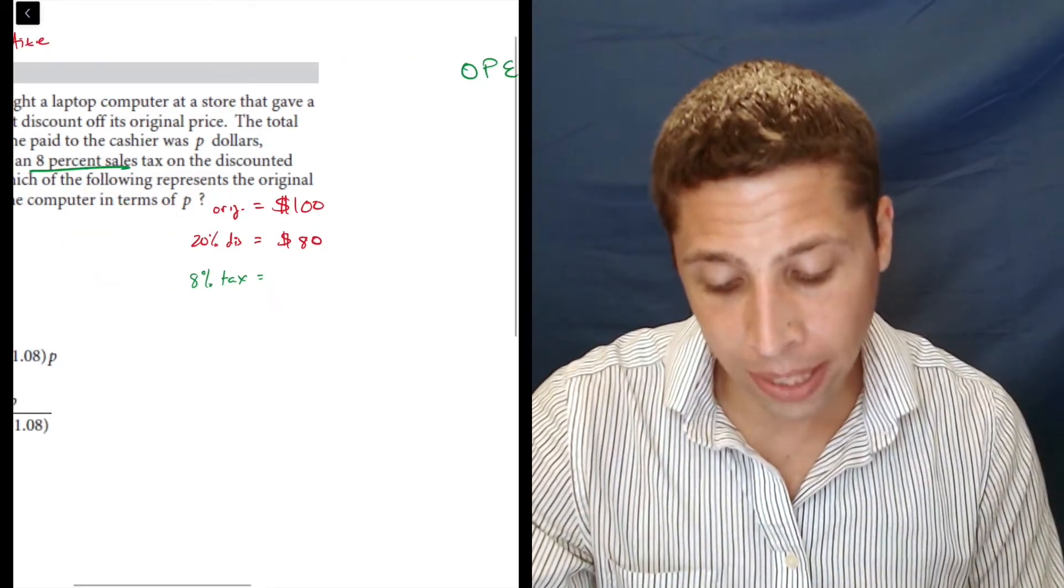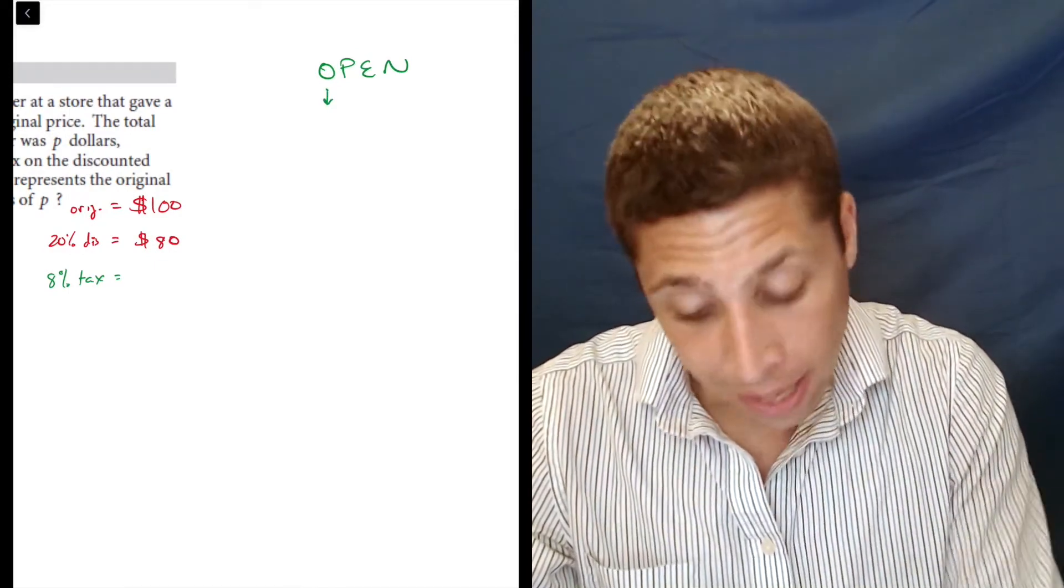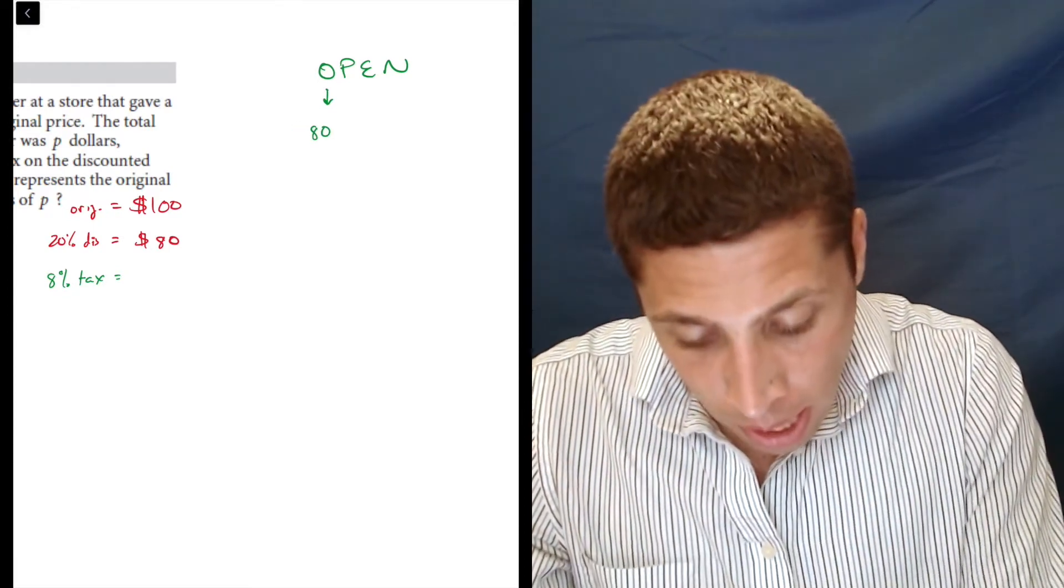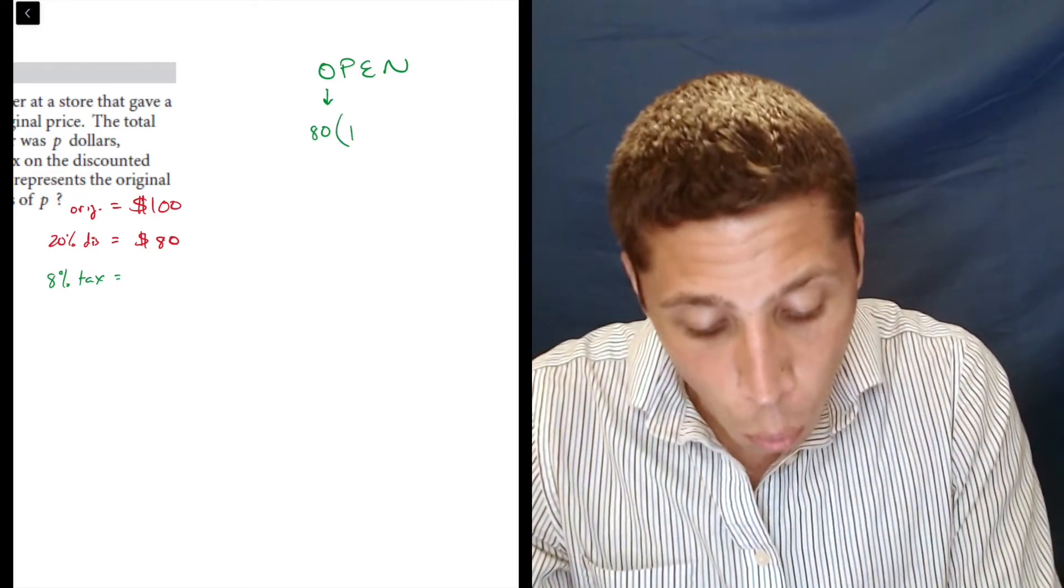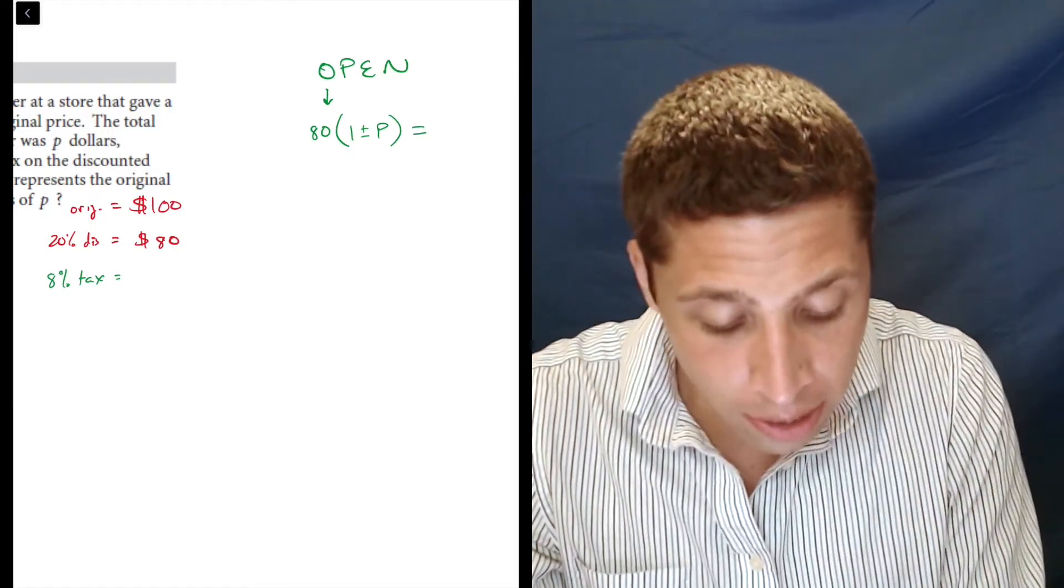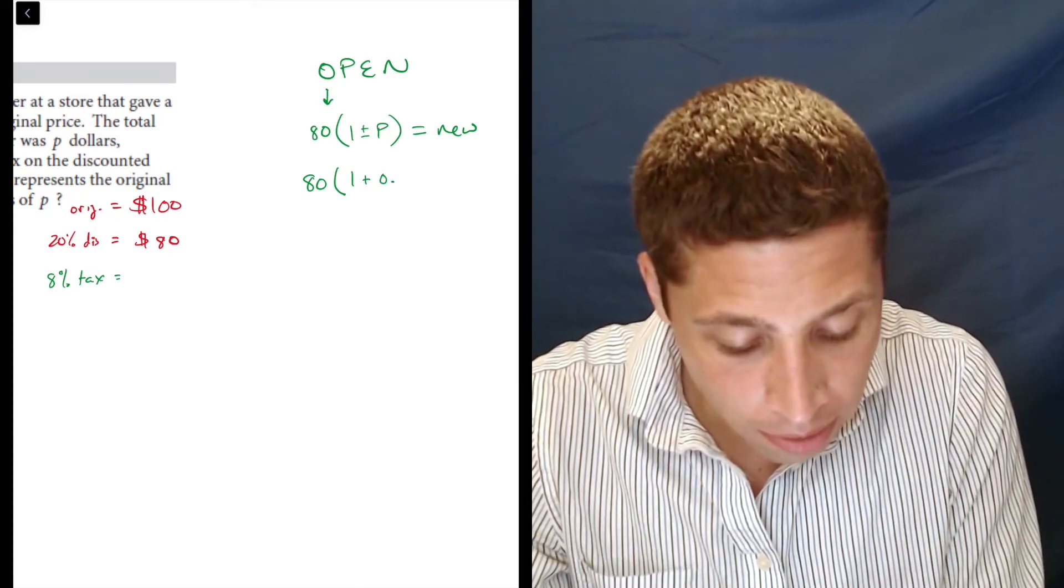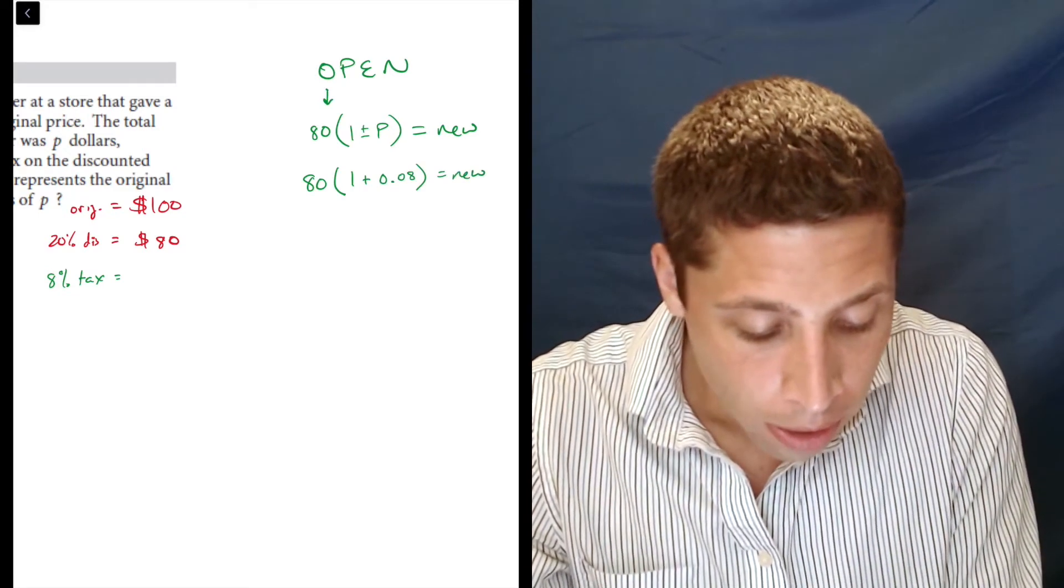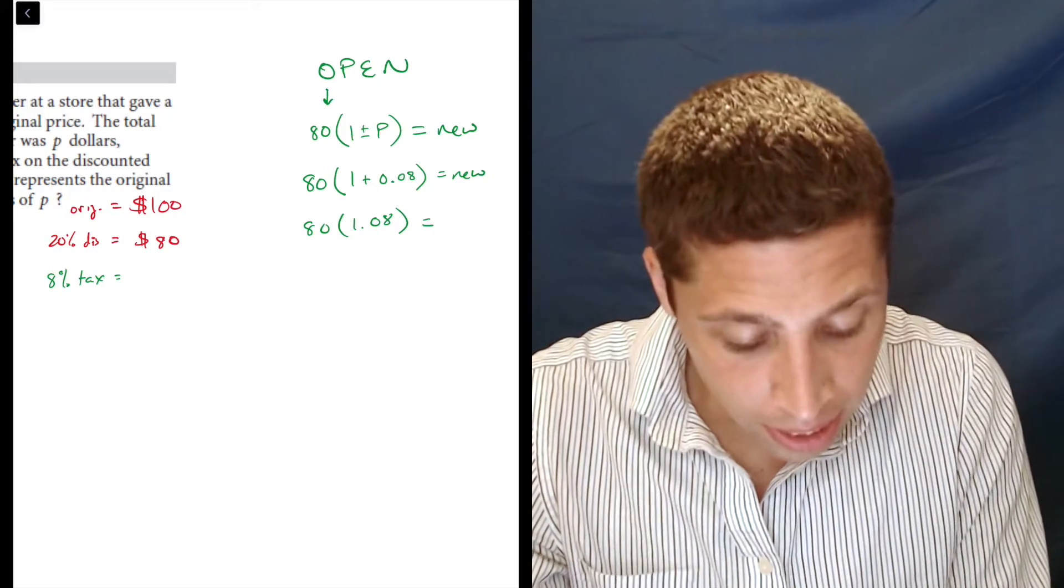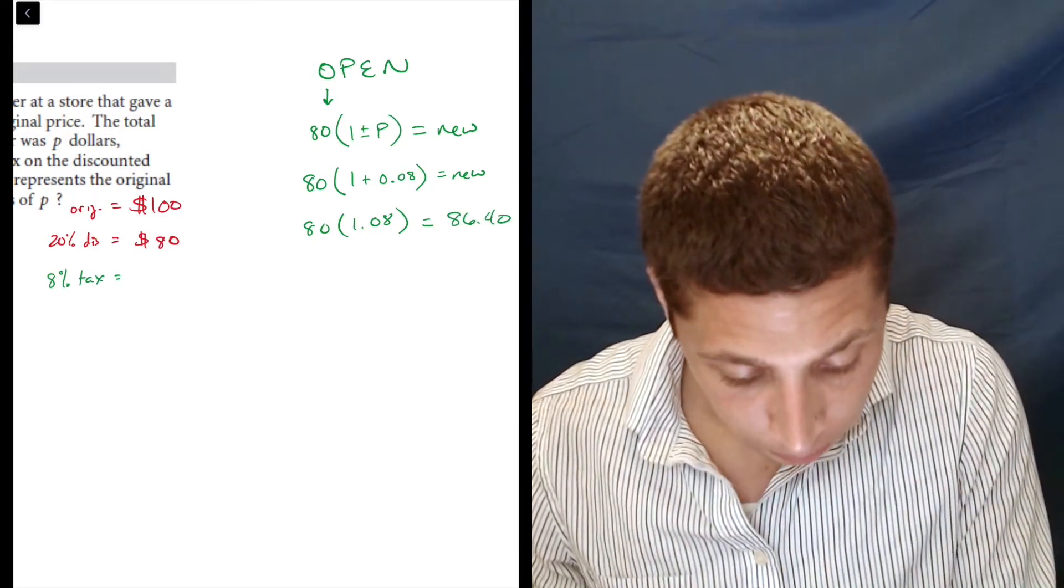When we have something like a tax, something that's added on, what this open formula tells us to do is we take the original amount. In this case, the original is now $80. And then we multiply by 1 plus or minus p depending on whether we're adding something on or subtracting it. So in this case, the original is going to be multiplied by 1 plus 0.08. The percentage is always written as a decimal. And so that means 1.08 times 80, and we can just now use the calculator, 86.40.